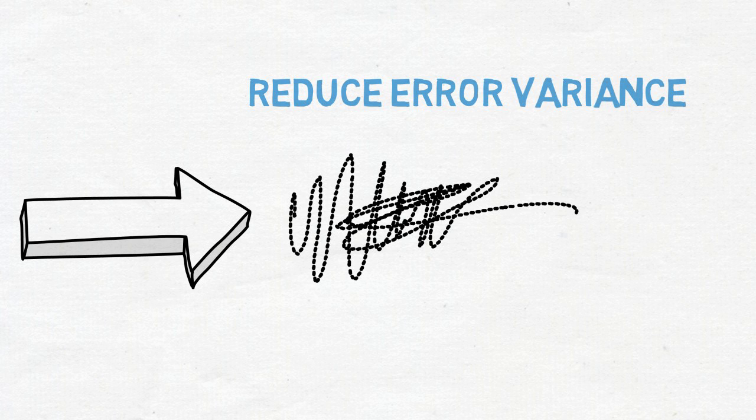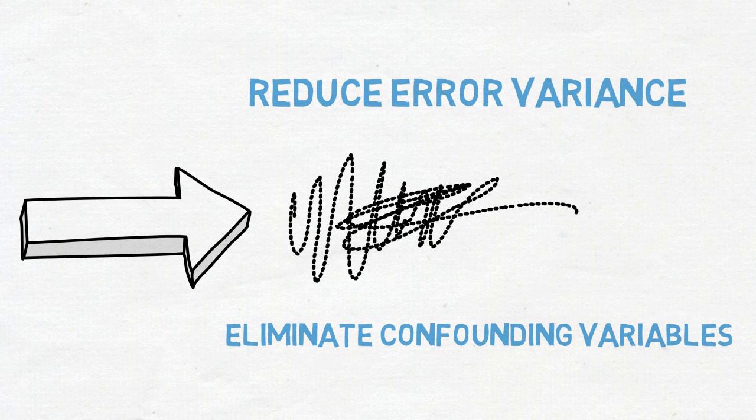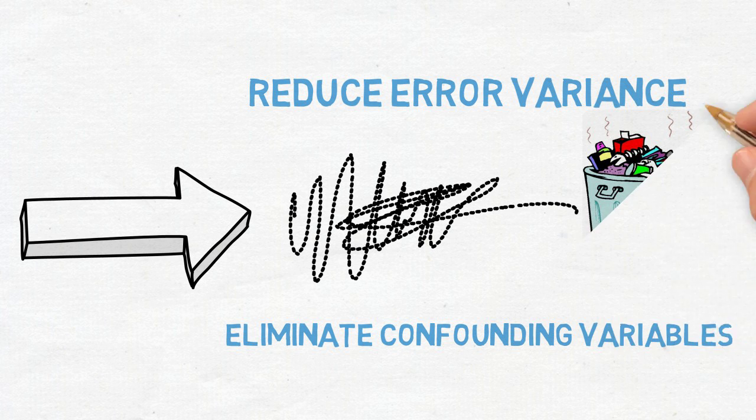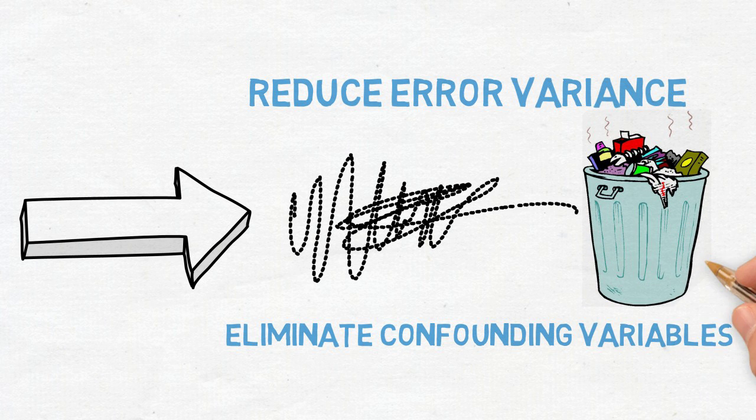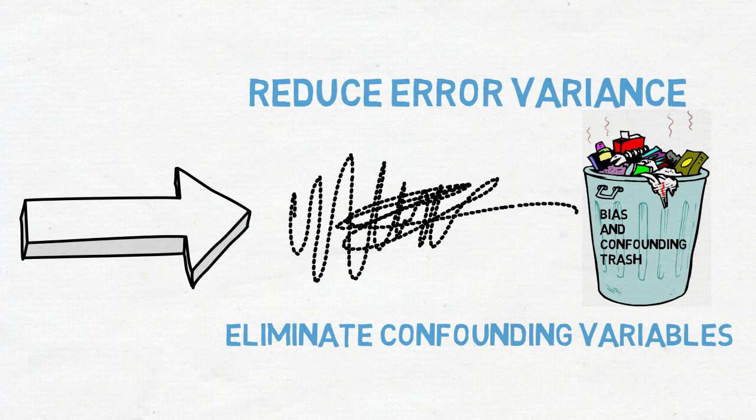Another reason to include covariates in the analysis is to eliminate confounds, so variables other than the experimental manipulation that can influence the outcome. If any are known and measured, ANCOVA can reduce bias that would occur if these variables were uncontrolled for.